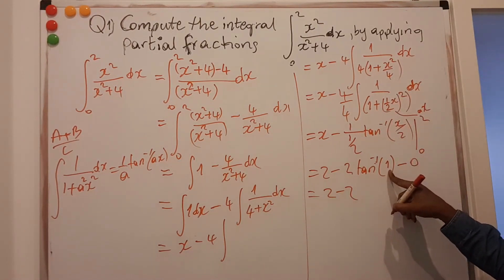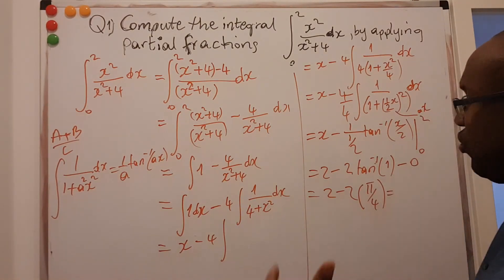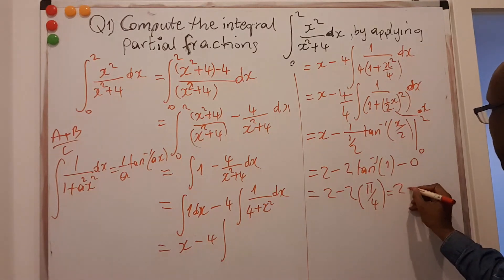So this is 2 minus 2. The tan inverse of 1 is pi on 4. So this is pi on 4. That's 45 degrees. So this is 2 minus pi on 2.